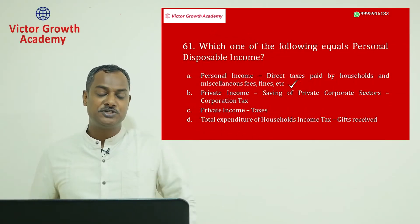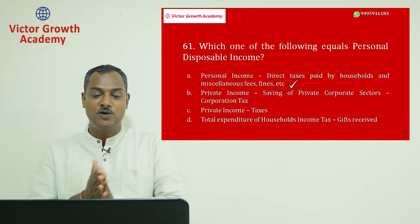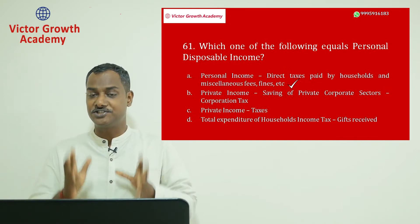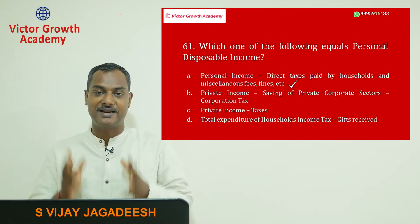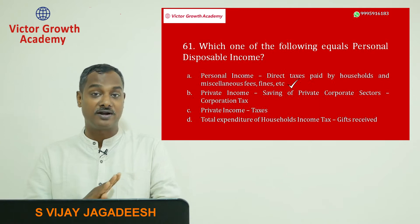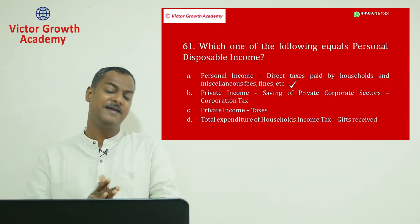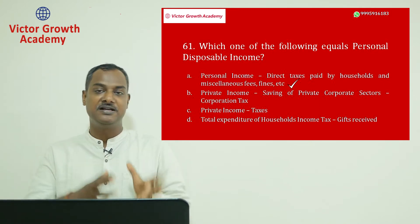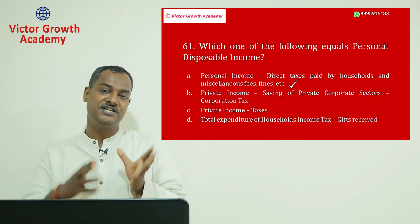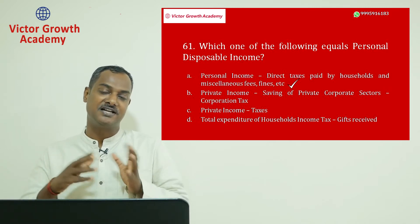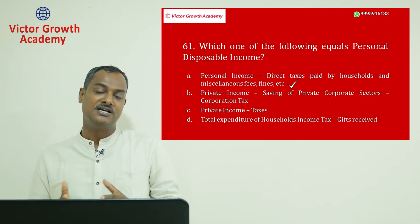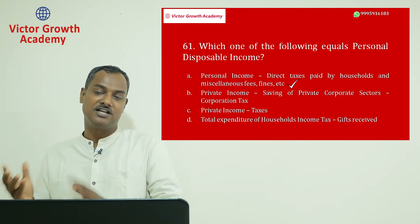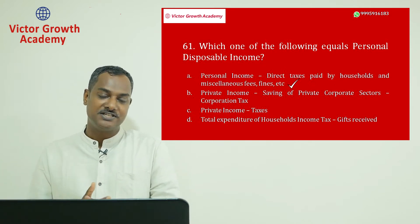Question number 61: which one of the following equals personal disposable income? This question has been directly asked from the NCERT introductory macroeconomics, where they explain how GDP becomes GNP, GNP becomes NNP, NNP becomes NNP at factor cost, which equals national income, and then after that comes disposable income.